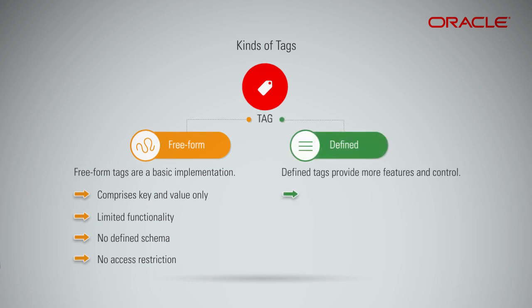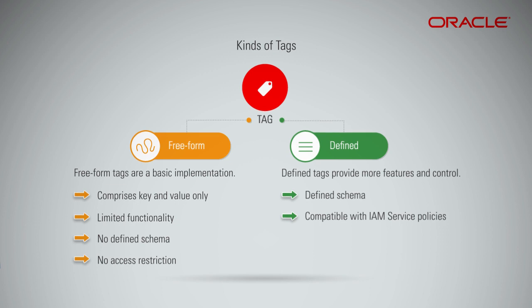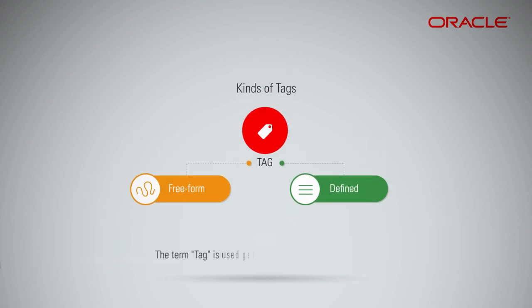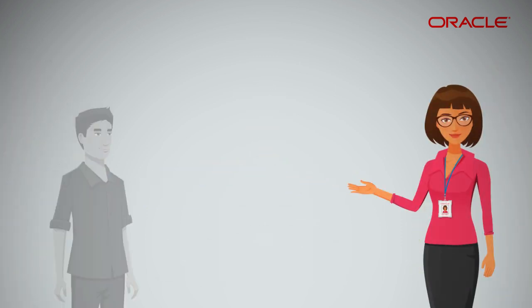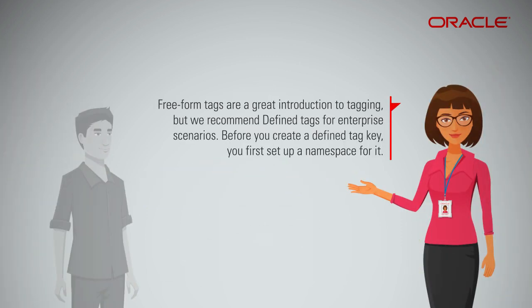Defined tags have a defined schema, which constrains the values you can apply to a tag. You can also restrict access to defined tags. A defined tag is the instance of a key definition applied to a resource — it is comprised of a namespace, a key, and a value. Freeform tags are a great introduction to tagging, but we recommend defined tags for enterprise scenarios.